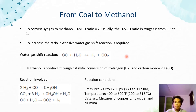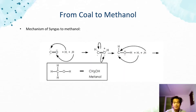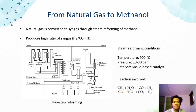Methanol is produced through catalytic conversion of hydrogen and carbon monoxide. This shows the mechanism of syngas to methanol, which involves carbon monoxide with hydrogen gas to produce methanol. Natural gas is converted into syngas through steam reforming of methane, and it produces a high ratio of syngas.